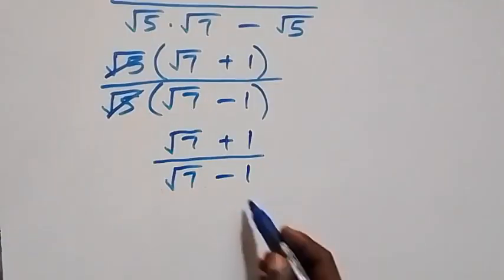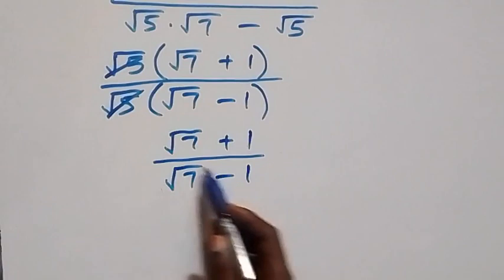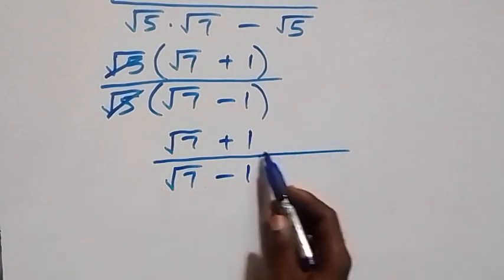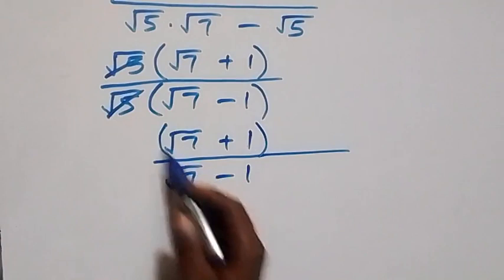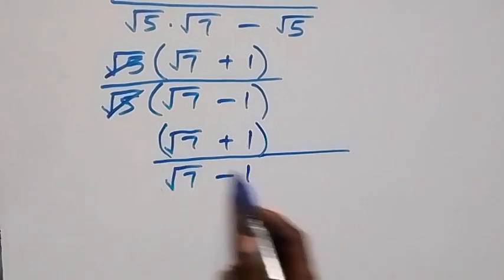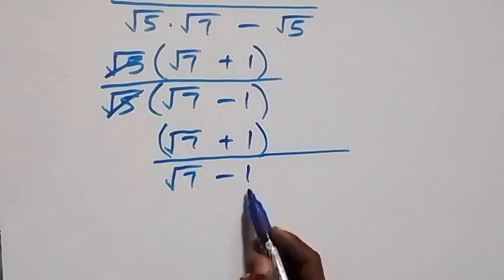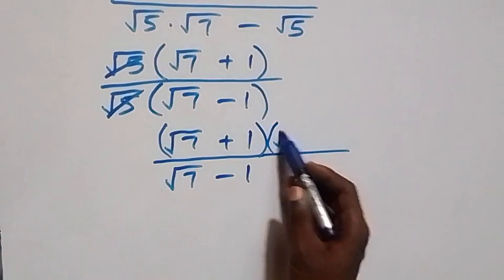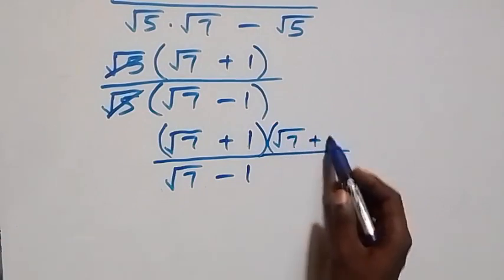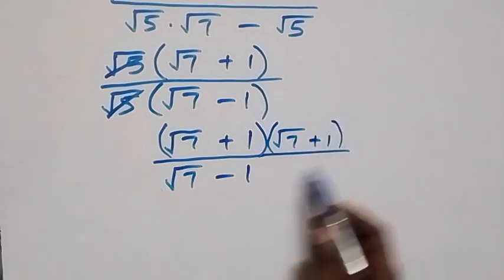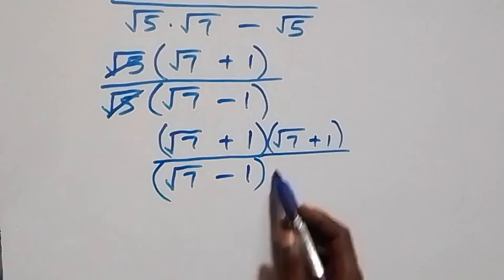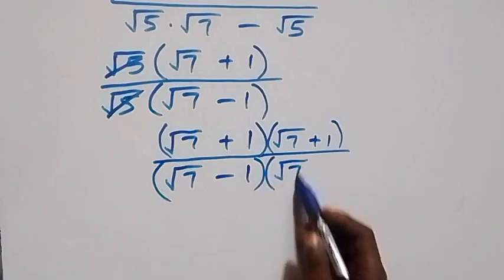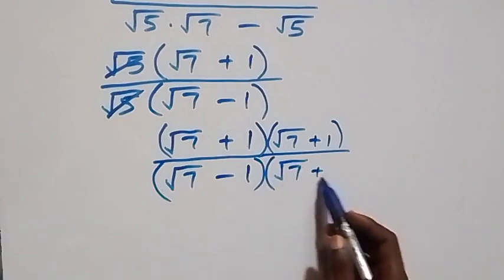Then here we can rationalize this. We multiply by the conjugate of the denominator, which is (√7 + 1), and also multiply the denominator by the same thing (√7 + 1).